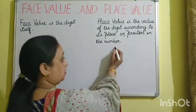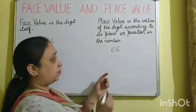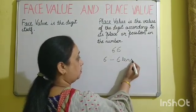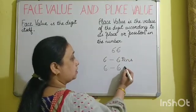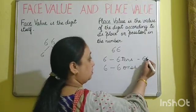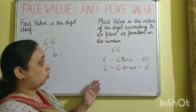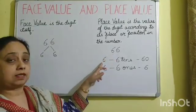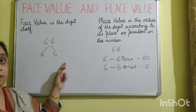In the number 66, we have two 6s. The place value of the first 6 is 6 tens, and the place value of the second 6 is 6 ones. 6 tens means 60, and 6 ones is 6 itself. So the place value depends upon the position of the 6, but the face value does not depend upon the position where it is placed.